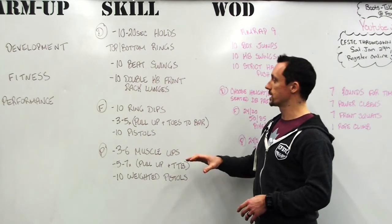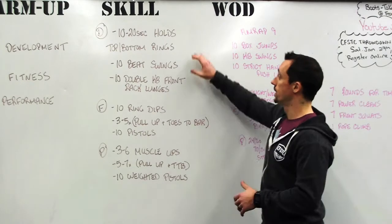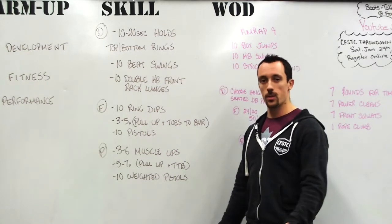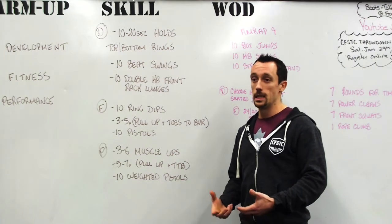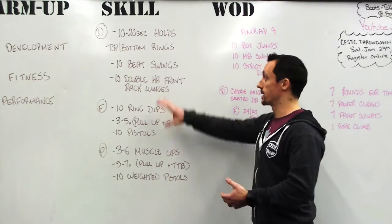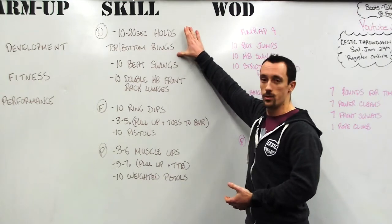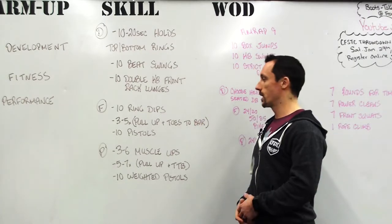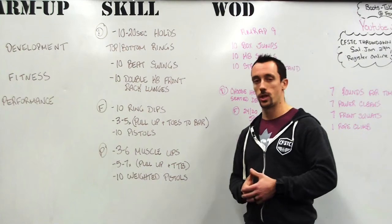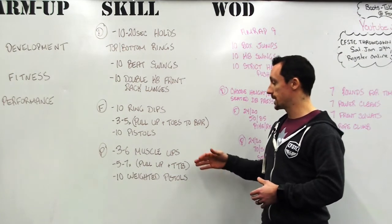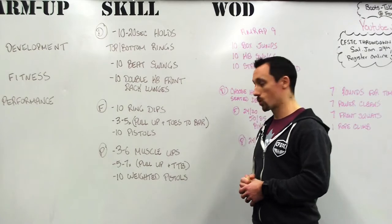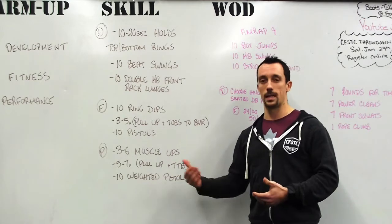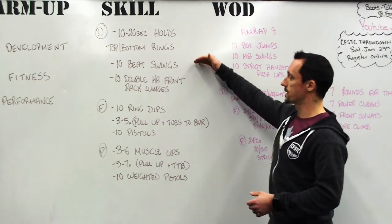Looking at the rings: in development we're focusing on building strength by just supporting ourselves on the ring — static holds, maybe even adding a band. If you're capable of ring dips, the fitness guideline gives you 10 ring dips. If you want to take it to the next level and you have muscle-ups or you're close, performance gives you the opportunity to work on those muscle-ups.